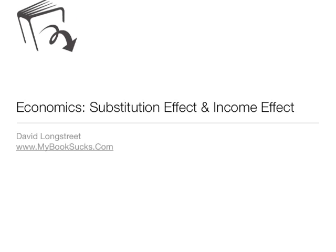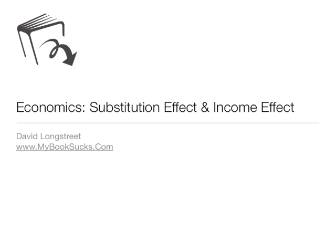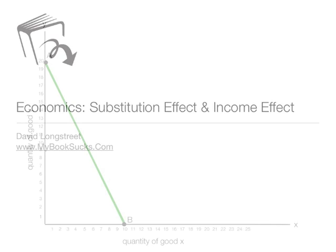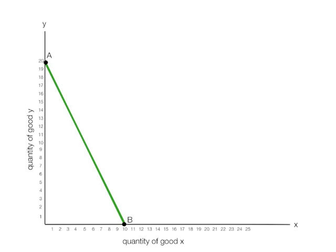I'm going to discuss in this video the substitution and income effect. Now imagine we have a budget line like this, the green line, and the price of Y is $7.50.